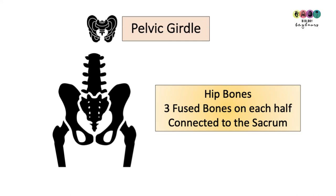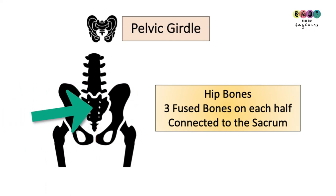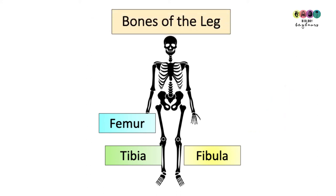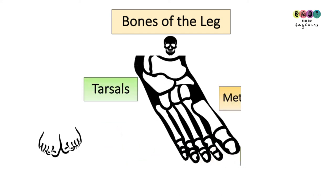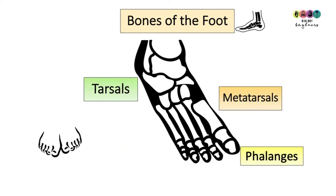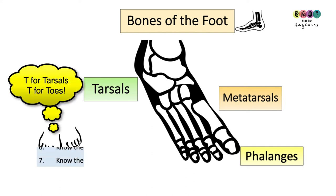The pelvic girdle is split into two halves; each half connects to the sacrum at the back and is made up of three hip bones fused together on each half. The legs attach into the pelvic girdle — you've got the femur, the tibia and the fibula. The bones of the foot are very like the hand: tarsals, metatarsals and phalanges, which are the bones of the toes. To remember tarsals, think T for toes, T for tarsals.